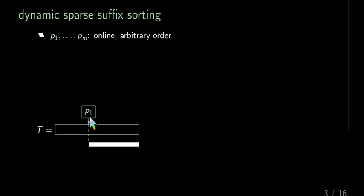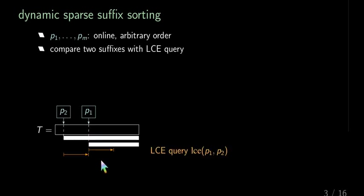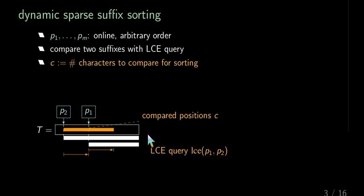So here P1 arrives and we just store it. But when P2 arrives, then we issue an LCE query. So we query for the longest common prefix between the suffixes starting at the positions P1 and P2, which gives us these orange arrows and we can collect the compared characters in this orange variable C. This determines the LCE or the LCP between those two suffixes and the character after the LCE is a mismatching character pair and this mismatching character pair determines the order between P1 and P2.